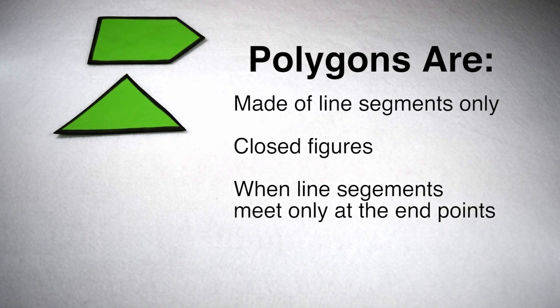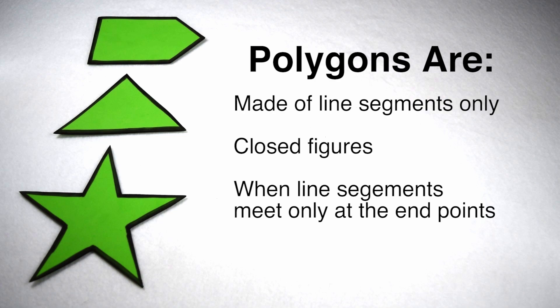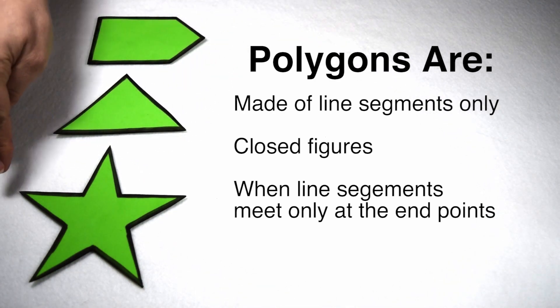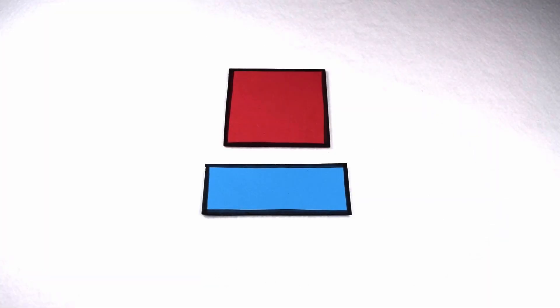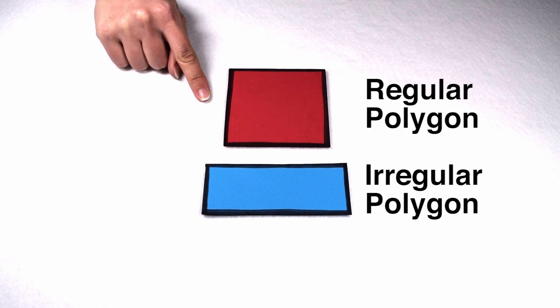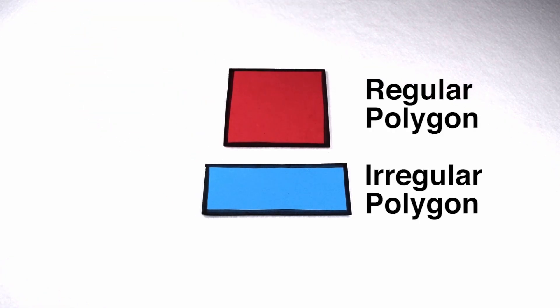And thirdly, our figure needs to be simple, meaning that our line segments meet at the end points only, no crisscrossing parts in the middle. Now that we know the characteristics of a polygon, we need to know that polygons can be classified into two main categories, regular polygons and irregular polygons.